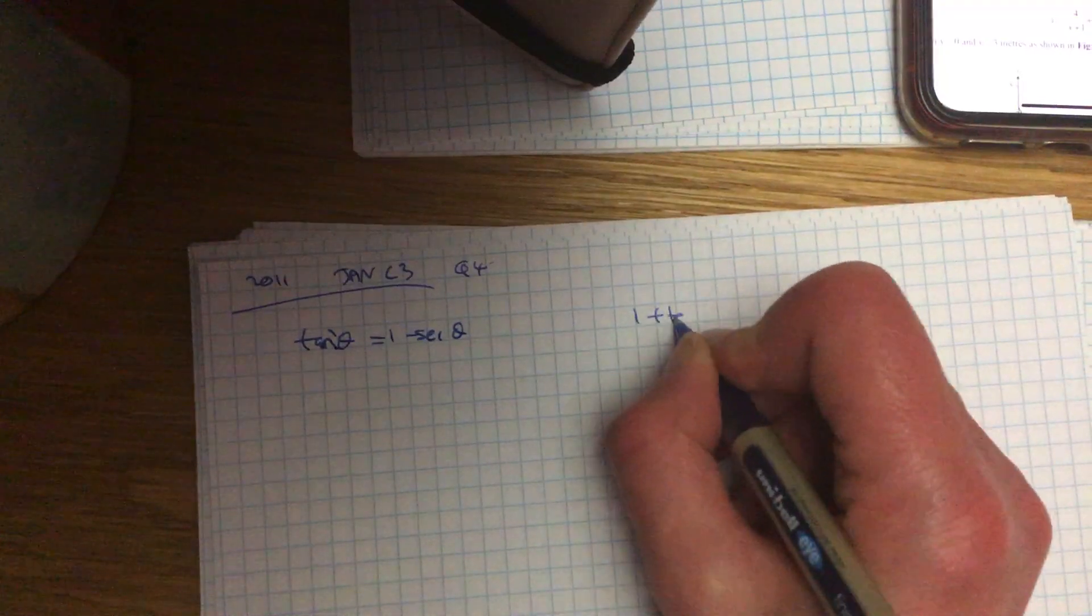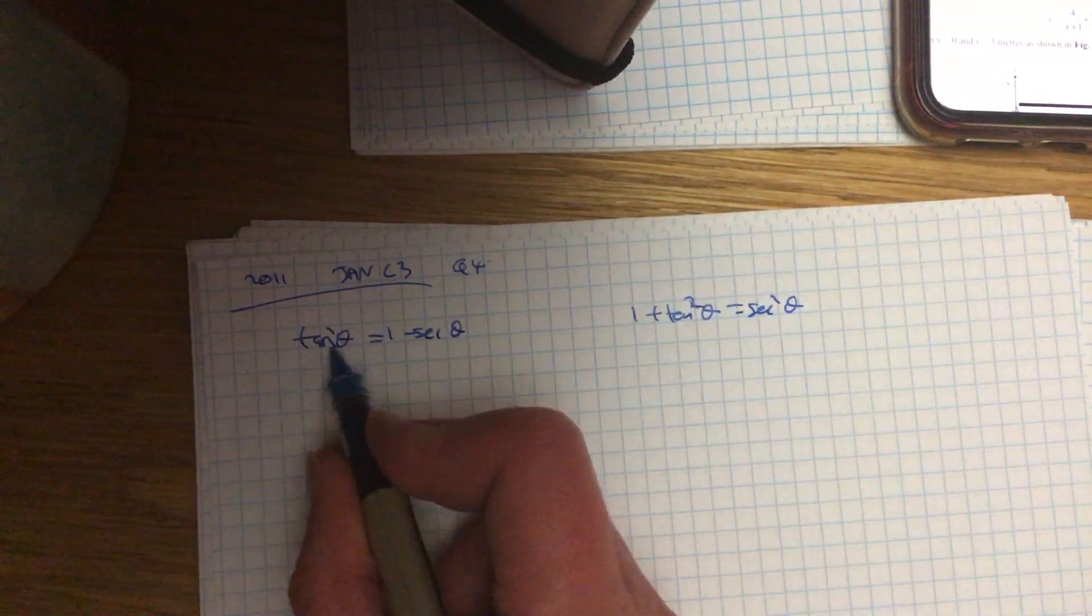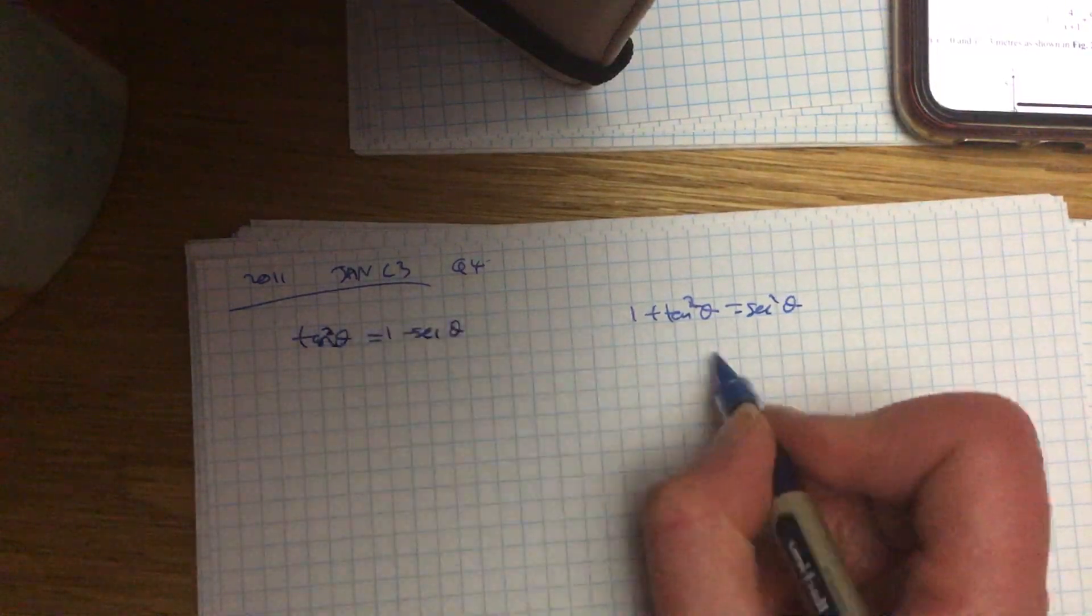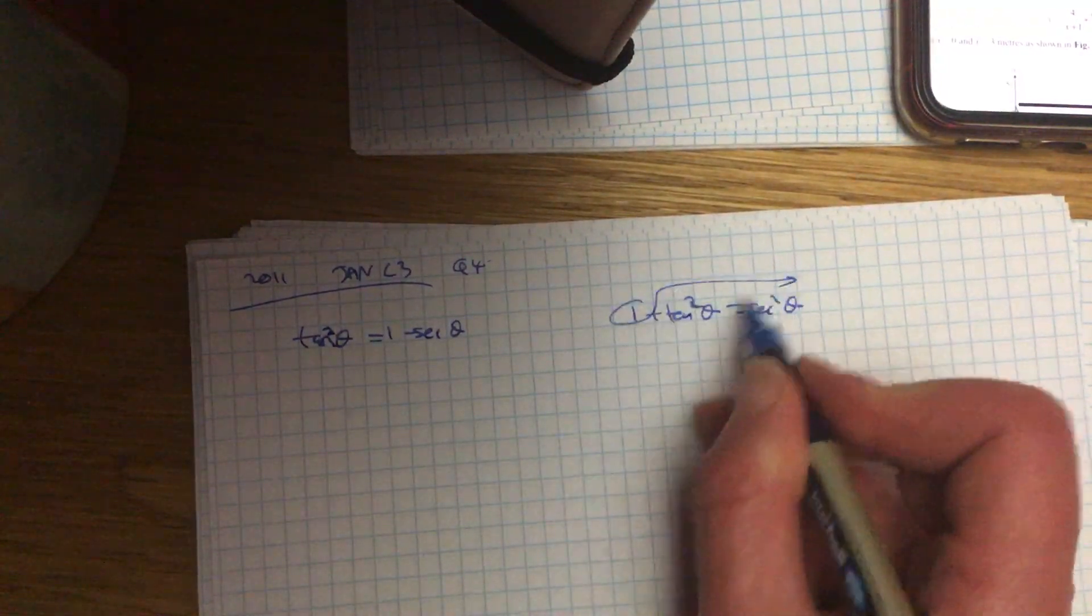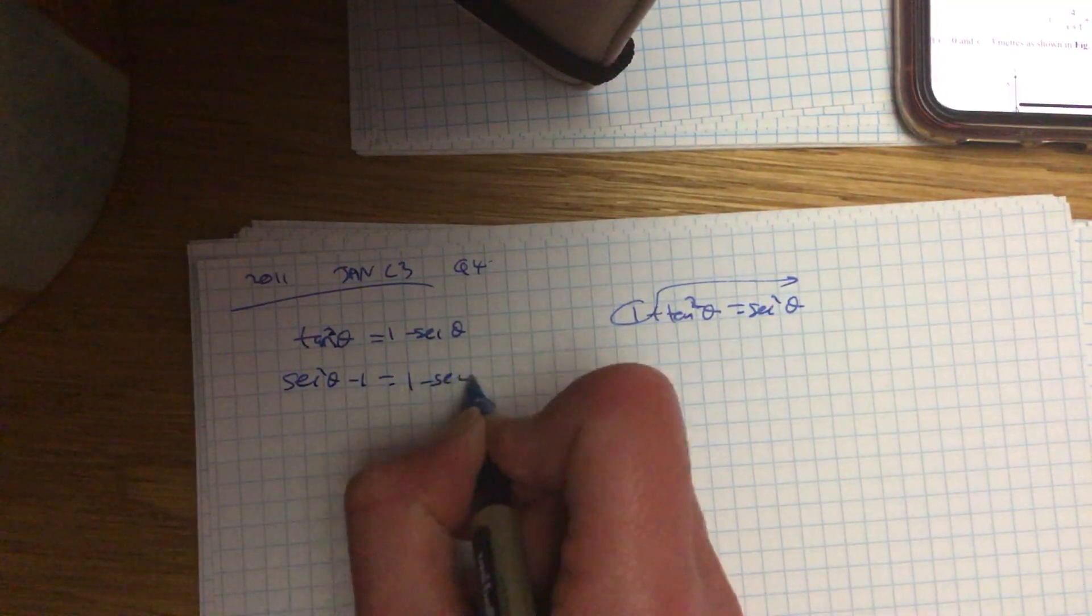I'm going to be using 1 plus tan squared equals sec squared. Always rearrange the squared one, so tan squared is sec squared minus 1. Now just take your time with this.